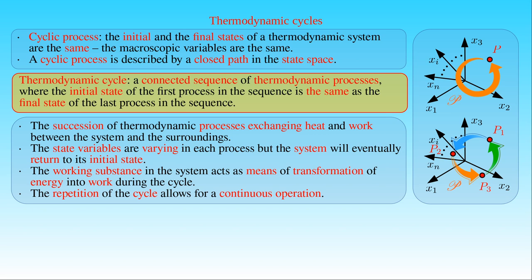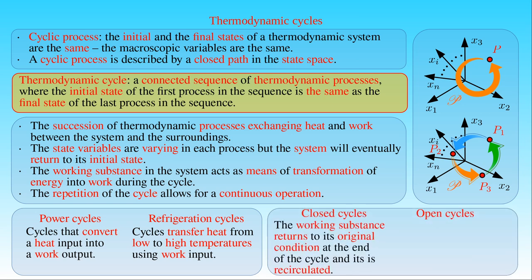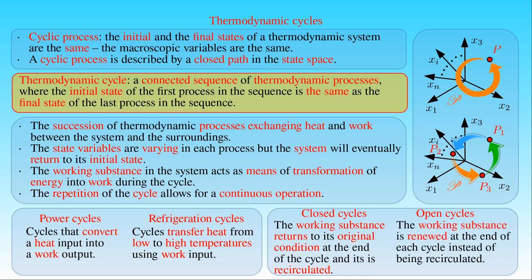Two primary classes of thermodynamic cycles are power cycles and refrigeration cycles. Power cycles are cycles receiving heat as input energy and producing work as output energy, in other words converting heat into work. Therefore, power cycles are also called heat engines. Refrigeration cycles transfer heat from low to high temperatures using work input, in other words they convert work into heat, and are also called heat pumps. Thermodynamic cycles can also be categorized as closed and open cycles. In closed thermodynamic cycles, the working substance returns to its original condition at the end of the cycle and is recirculated. For example, the working fluid in refrigerators and air conditioners is driven around a closed thermodynamic cycle between a heat source and a heat sink held at different temperatures. In open cycles, the working substance is renewed at the end of each cycle instead of being recirculated. For example, in internal combustion engines, gases produced in the combustion are exhausted and replaced by fresh air-fuel mixture at the end of each cycle.